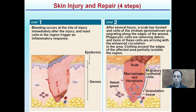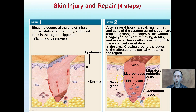Phagocytotic cells remove debris to clean up the injury site, since bacteria could get in. More cells arrive with enhanced circulation to the area — it may feel warm and appear red because more blood is going to that area.